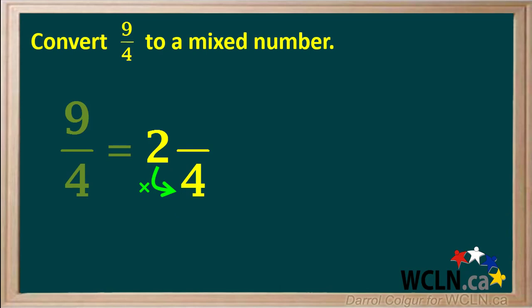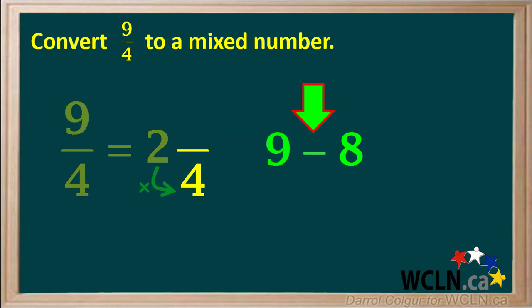To find the numerator of this fraction, we start by multiplying the whole number 2 by the denominator 4. 2 times 4 equals 8. Now we take the numerator of the original fraction, which is 9, and we subtract the 8 from it, to give us 1.